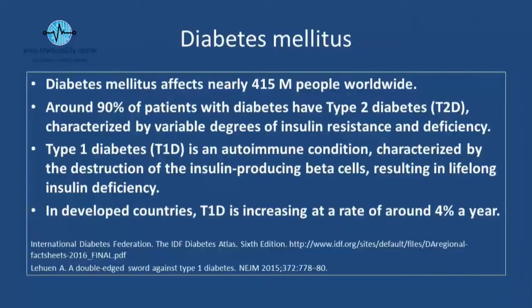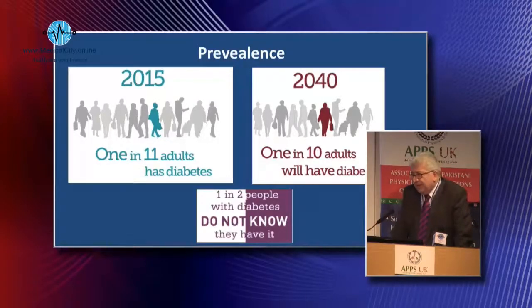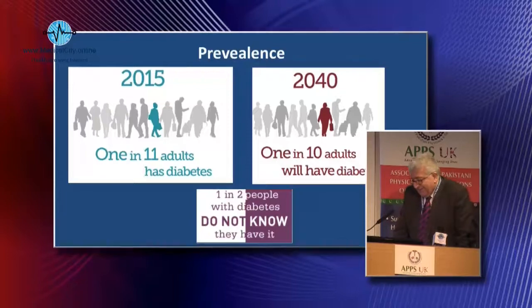Type 2 diabetes is characterized by variable degrees of insulin resistance and deficiency, but type 1 diabetes is an autoimmune disease leading to destruction of insulin-producing beta cells. There is evidence that type 1 diabetes is increasing at about 4 percent per year, even in developing countries. Currently 1 in 11 adults have diabetes; by 2040 it is projected to be 1 in 10. The law of halves applies to diabetes — half of patients do not know they have it.